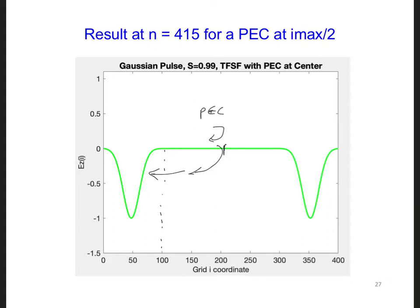Since the total field scatter field interface is purely numerical, it's not a physical interface. Here's a snapshot of the grid after 415 time steps. Notice this scattered wave over here.